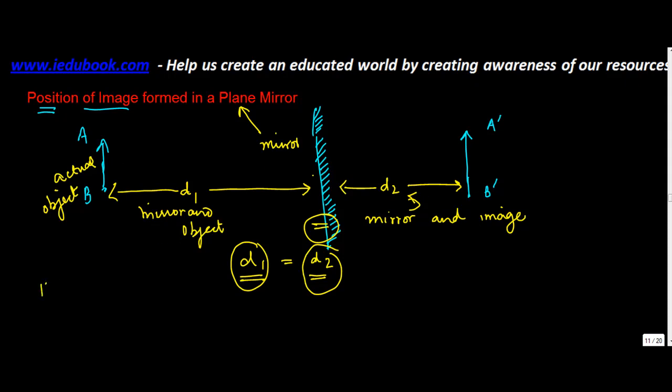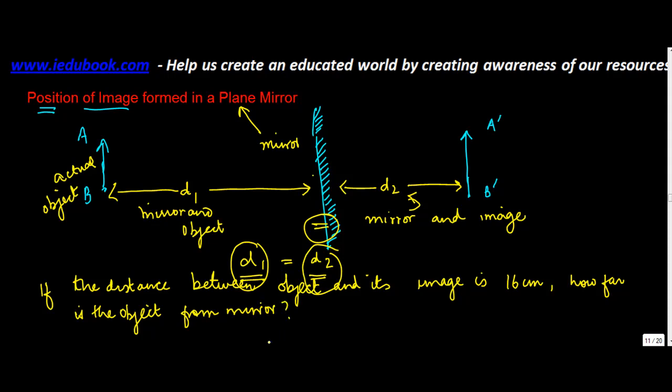So, let's say you are told, if the distance between object and its image is 16 cm, how far is the object from mirror? Now, you are told that if the distance between the object, which is this, and its image, which is this, is 16 cm. So, you are told that D1 plus D2 is equal to 16 cm. And you are told to find out how far is the object from the mirror.